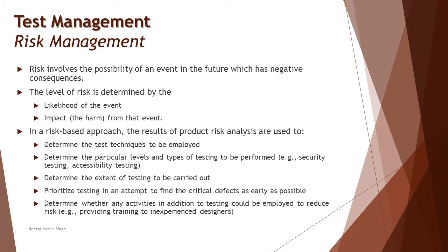The very first thing is to identify the possible risks in your projects and products and classify them accordingly under their category. The second important thing is, once you have identified the risk, you try to assess the level of risk — because without determining the level of risk, you may not be able to understand how much effort needs to be put in order to mitigate it.